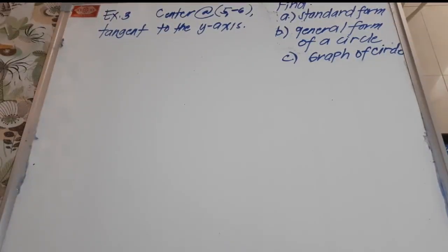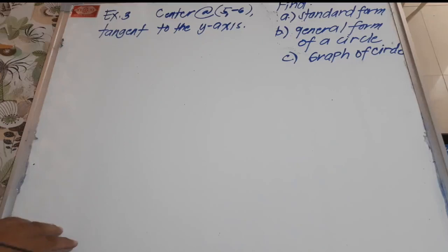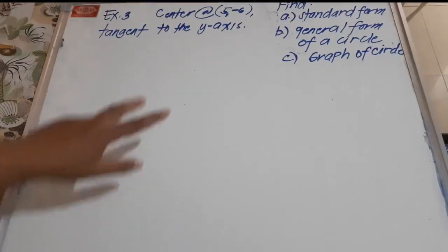This will be my third video and third example on the topic about finding the standard and general equations of a circle. We have here different conditions of the circle, and we're going to find the values of all the equations in standard form and in general form. At the same time, we're going to sketch the graph of the circle.